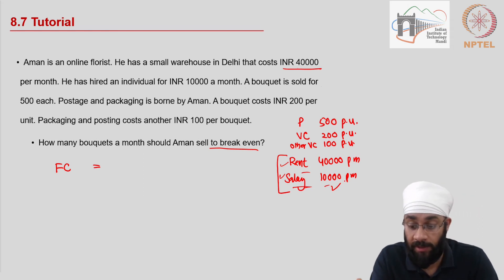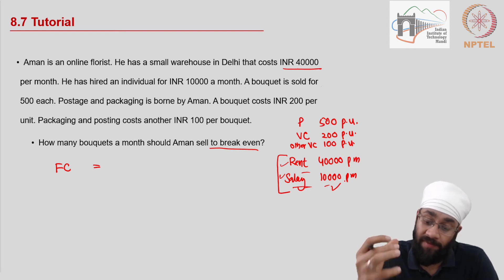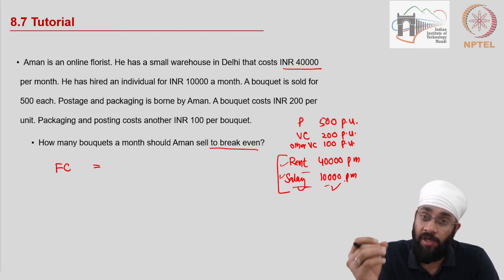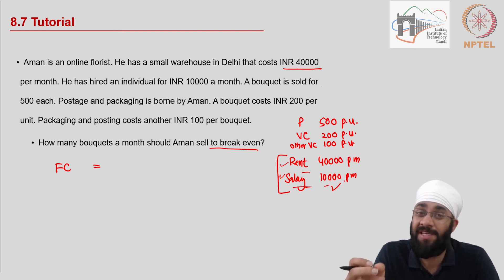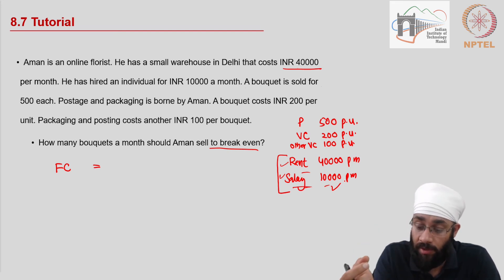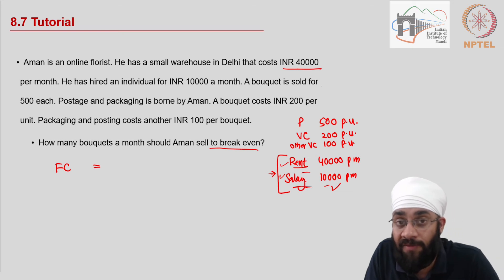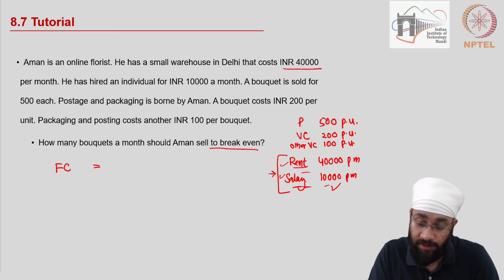What's important in this tutorial is that variable cost varies with the quantity of production or sales — not with the time period. Do not go by just the name of an expense; understand its nature.